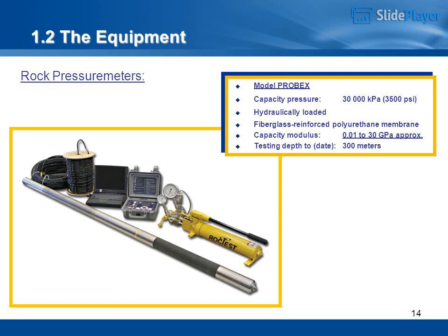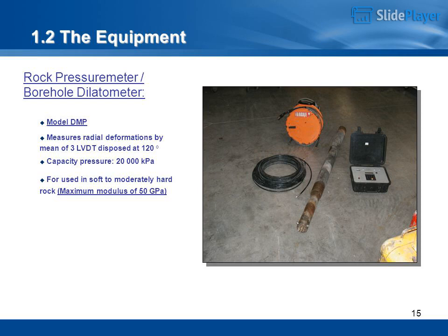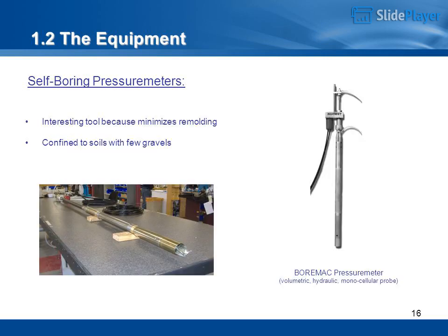Rock pressuremeter — Model Probe X: capacity pressure of 30,000+ kPa (3,500 psi), hydraulically loaded, fiberglass-reinforced polyurethane membrane, capacity modulus of approximately 0.01 to 30 GPa, testing depth to date of 300 meters. Rock pressuremeter — Borehole Dilatometer, Model MP: measures radial deformations by means of 3 LVDTs disposed at 120 degrees, capacity pressure of 20,000+ kPa, for use in soft to moderately hard rock with maximum modulus of 50 GPa.